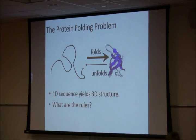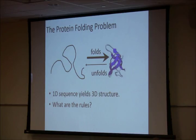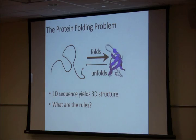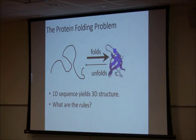What rules are involved? This is a spontaneous process — these things will fold on their own. You can put them in a nasty chemical like urea or guanidinium chloride to make them unfold, and then dilute it out and they'll refold to their native structure. The simplest statement of the problem is: could we make a sequence of amino acids from scratch, synthesize it, and get it to fold into what we want? That would be a complete understanding of the folding problem.